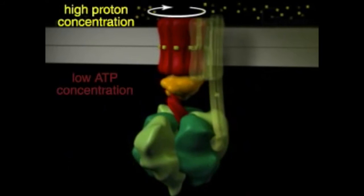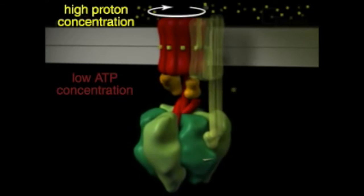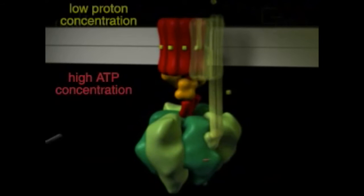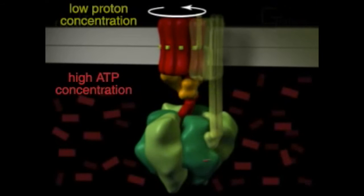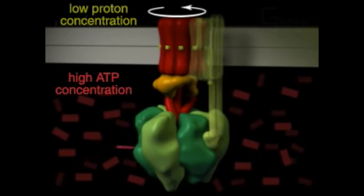Like any enzyme, ATP synthase works in either direction. If the concentration of ATP is high and the proton gradient low, ATP synthase will run in reverse, hydrolyzing ATP and pumping protons across the membrane.